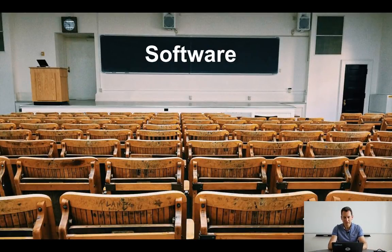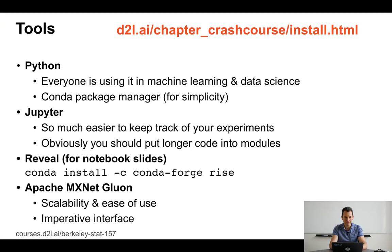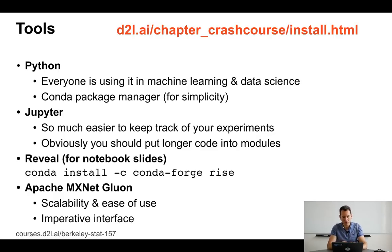This is a class on deep learning, both theory and practice. In order to get the practical aspects done well, we'll need to talk about software: how you install things, how to get help, and basically where you can run things. In reality, everybody's using Python in one way or another for machine learning and data science. We're going to use conda as a package manager for simplicity. There are more detailed instructions in the installation chapter on d2l.ai, so this is really just an overview.